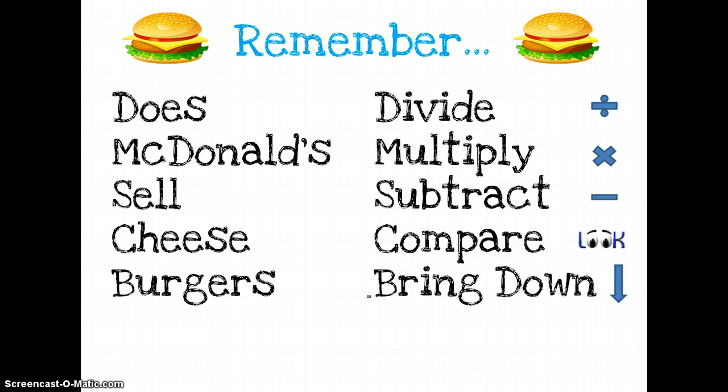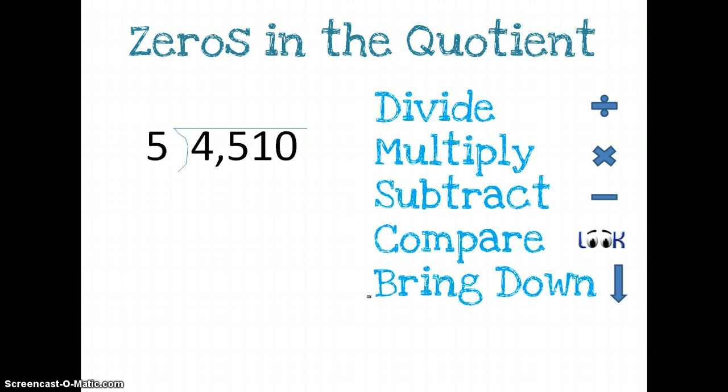So let's get started and try one of these problems. Alright, we have the problem 4,510 divided by 5. So the first thing I do is I follow my rules. I divide. 5 will go into 4 zero times, so I'm going to move on and make this 45. How many times will 5 go into 45?